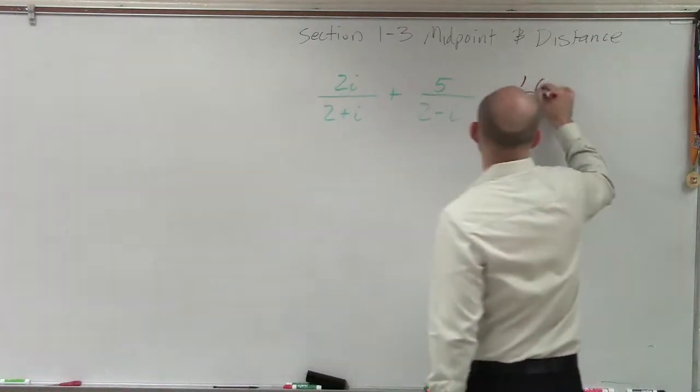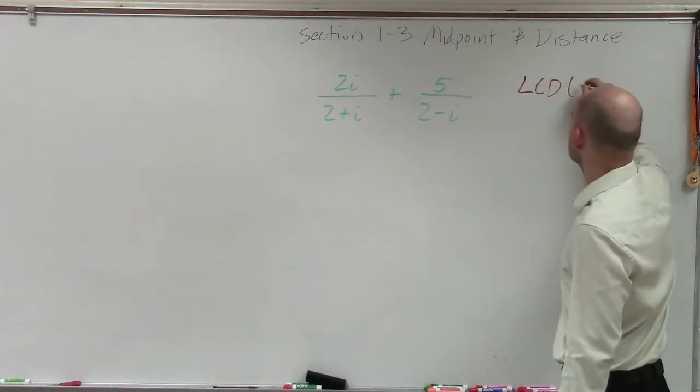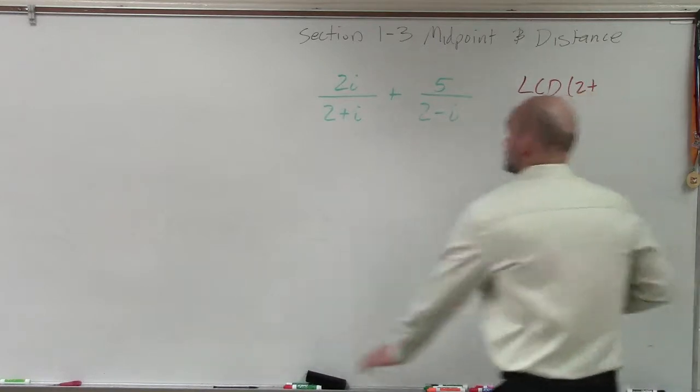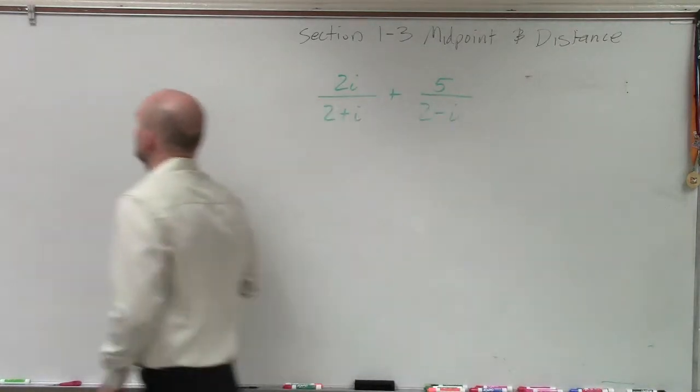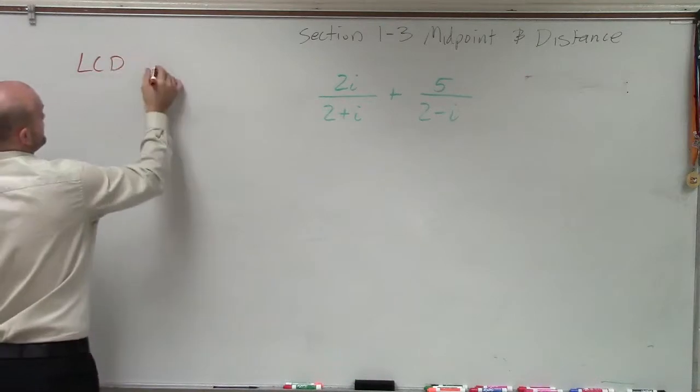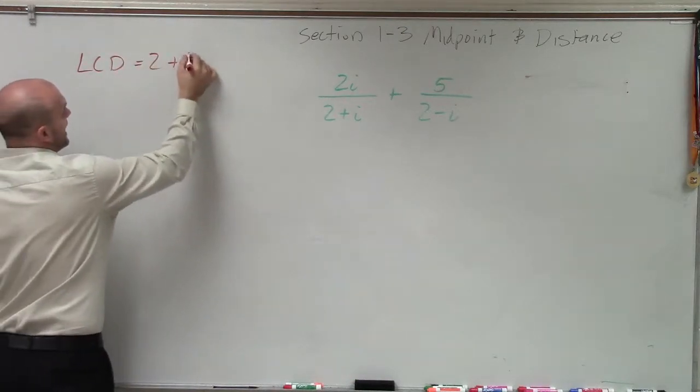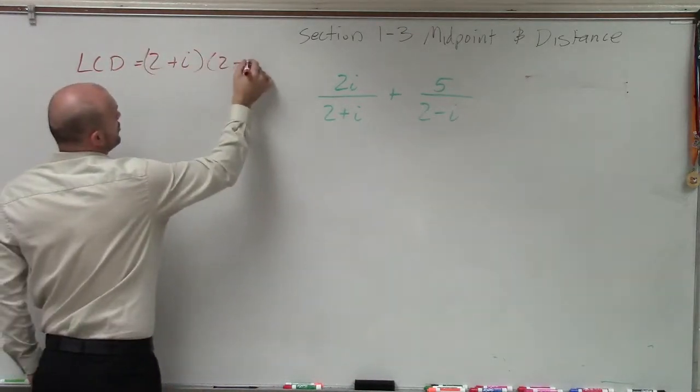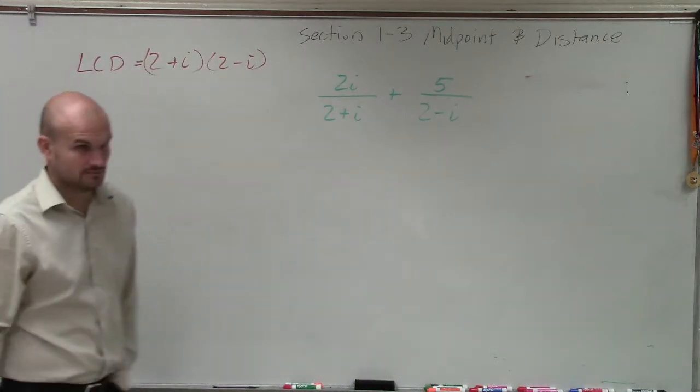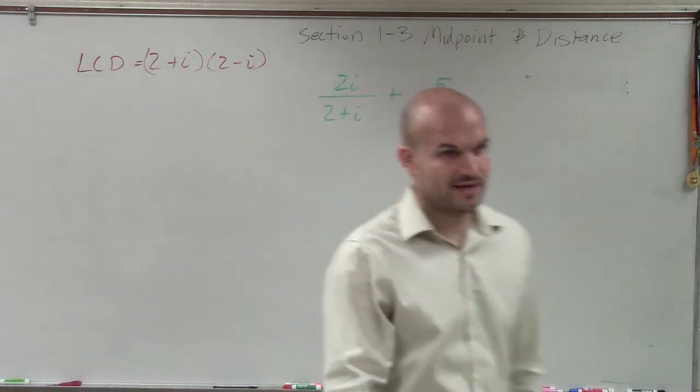And you can see that the least common denominator of these two expressions is going to be two plus—actually, right over here, my LCD is going to be (2+i) times (2-i). Yes? Everybody agree with me on that? Yes. Okay.